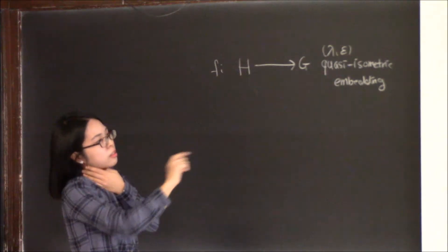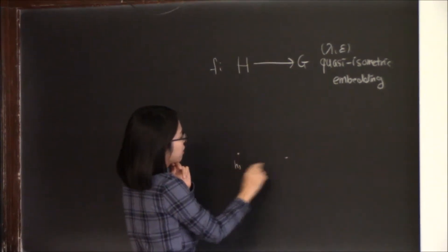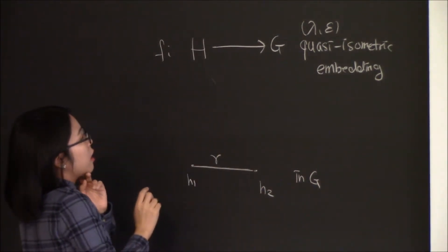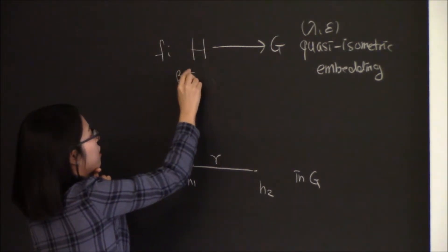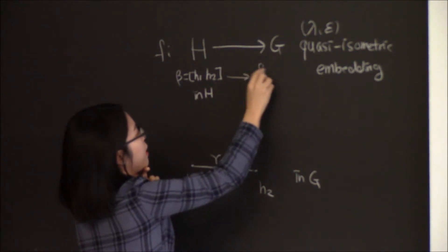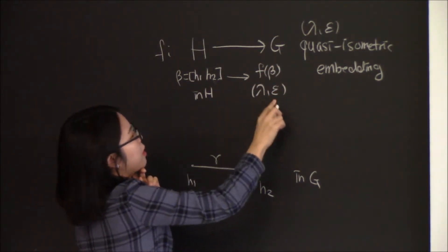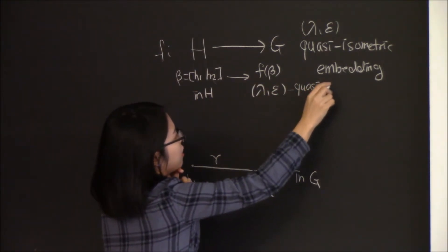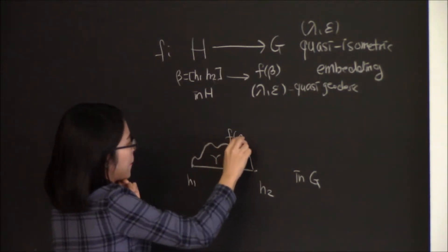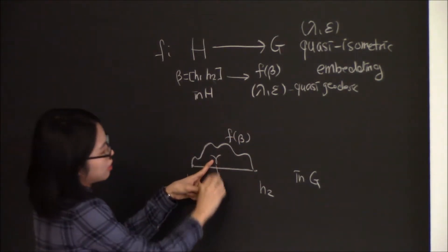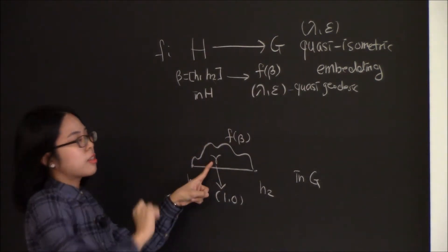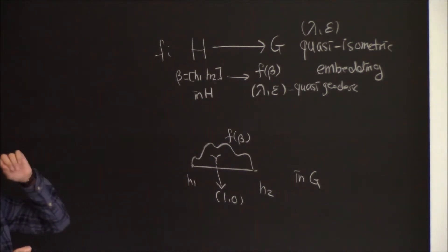To show a stable subgroup is quasi-convex, pick two points in H and think about a geodesic gamma in G. Think about a geodesic between H1 and H2 in H; call it F(beta), which is just a lambda,epsilon quasi-geodesic. Gamma is a geodesic, so it is a 1,0 quasi-geodesic, and hence also a lambda,epsilon quasi-geodesic. By the second condition of stability, they are close. So stability implies quasi-convexity.